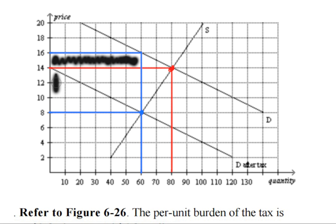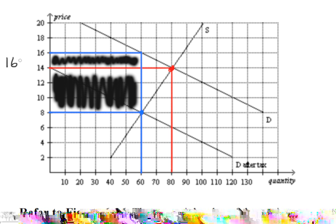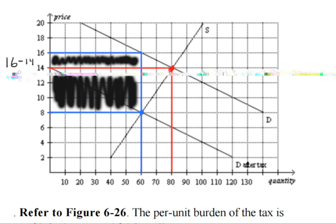And this right here represents the per-unit tax burden on the sellers. So, if we look right here, we have $16 minus $14. So that's a $2 per-unit tax burden on the buyers.